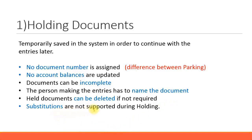Substitutions are not supported during holding — we will cover substitution later in the presentation. For example, if you want to assign a profit center to a GL account, the system might automatically substitute it with another one. Just know that substitutions and validations are applied at the time of posting a document. To recap: the main important difference between holding a document and parking a document is that no document number is assigned by the system for a held document.